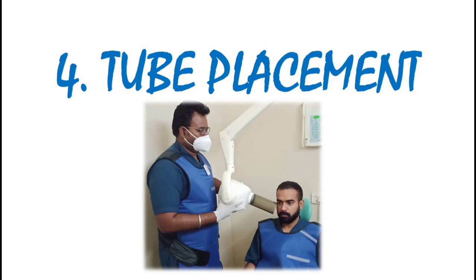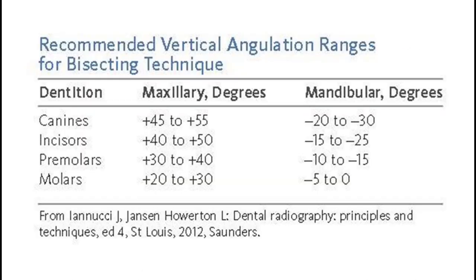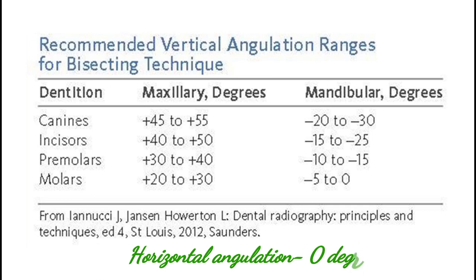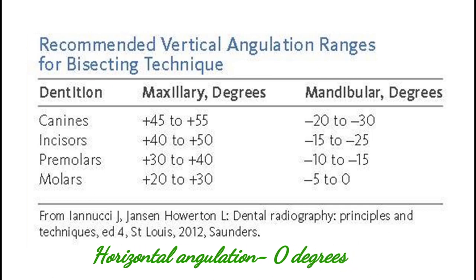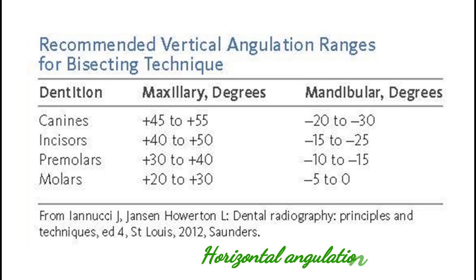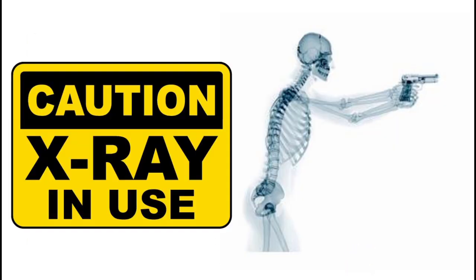The next step is tube placement according to the recommended vertical angulation values. Here we are using the bisecting angle technique, as the paralleling technique can be used only with the film holder. So now we are ready to shoot the x-ray.